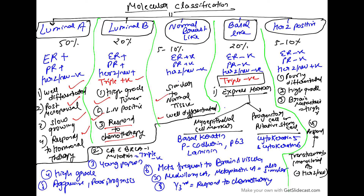Basal-like is very important. 20% of tumors are basal-like and are triple negative: ER-negative, PR-negative, HER2-neu negative. They express markers of myoepithelial cells like basal keratin, p-cadherin, p63, or laminin, as well as progenitor or putative stem cell markers like cytokeratin-5 and cytokeratin-6. Carcinomas with BRCA-1 mutations are usually triple negative; medullary and metaplastic carcinomas are also triple negative. These tumors are seen in young patients, are high-grade and aggressive with poor prognosis, metastasize frequently to the brain and viscera, and one-third responds completely to chemotherapy.